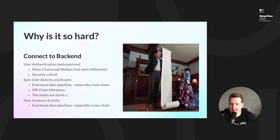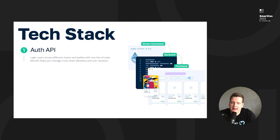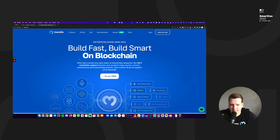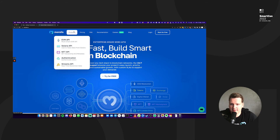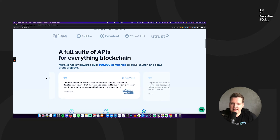An RPC node can't even give you all the metadata of an NFT because in many cases you have to do several requests to fetch it. Connecting straight to an RPC node and trying to build your app is like connecting straight to the CPU when building a website. The result is that you just want a small dApp but you end up needing 10 engineers to manage all these pipelines, fix bugs — and your competitors move faster because they use tools and solutions.